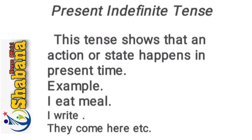Dear students, let us understand this with examples so that we know what action happens in the present time. For example, suppose Madam Shabana asks: what are you doing right now? The answer would be: I am eating — meaning the action is happening right now. If someone asks: what are you writing? And the answer is: I am writing — that is the action which is happening in present time, and for that we use this tense.